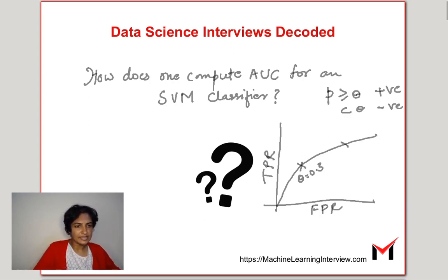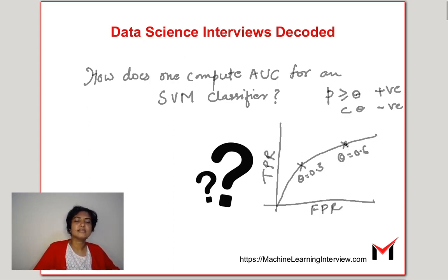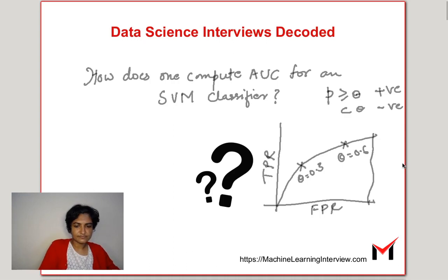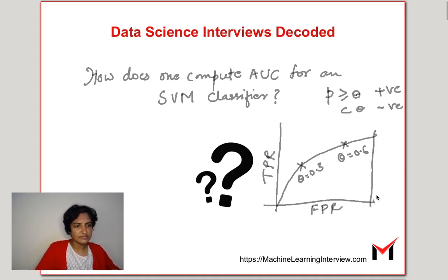If I take another threshold of 0.6, I get another pair of FPR and TPR — another point. When I join all these points, I get the ROC curve, and the area under this ROC curve is what I call the AUC metric.